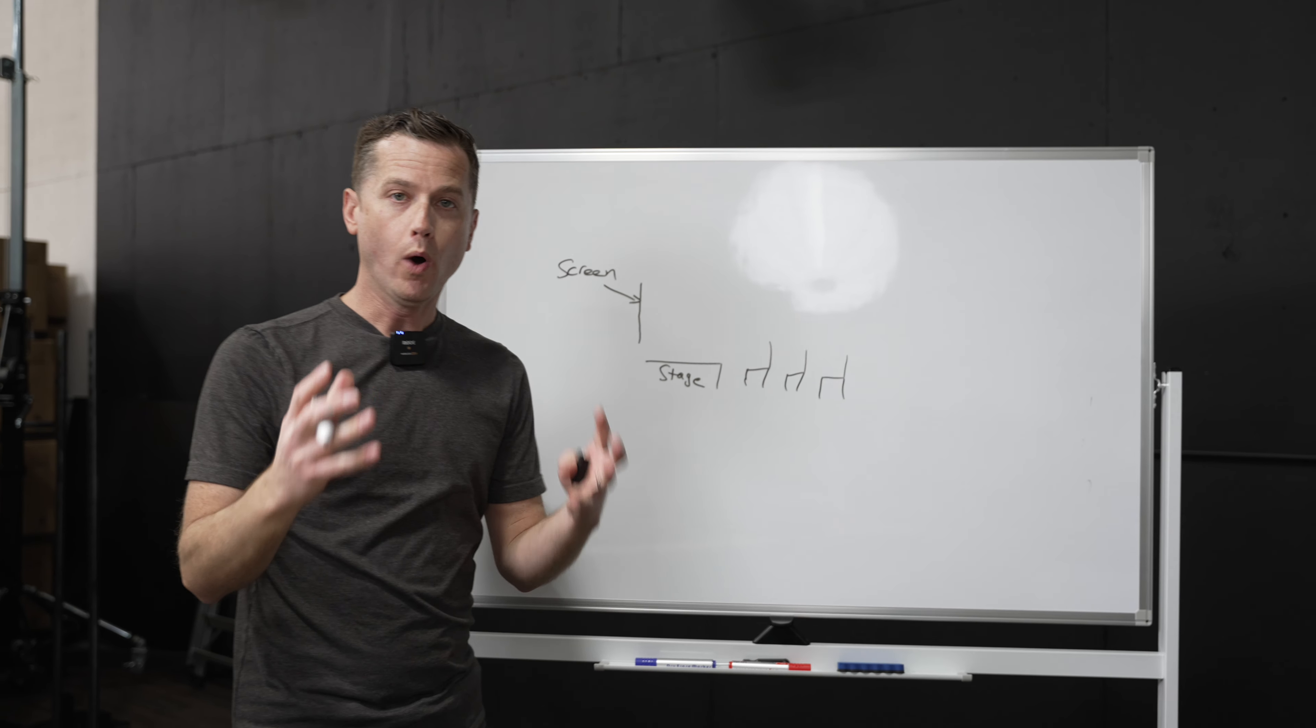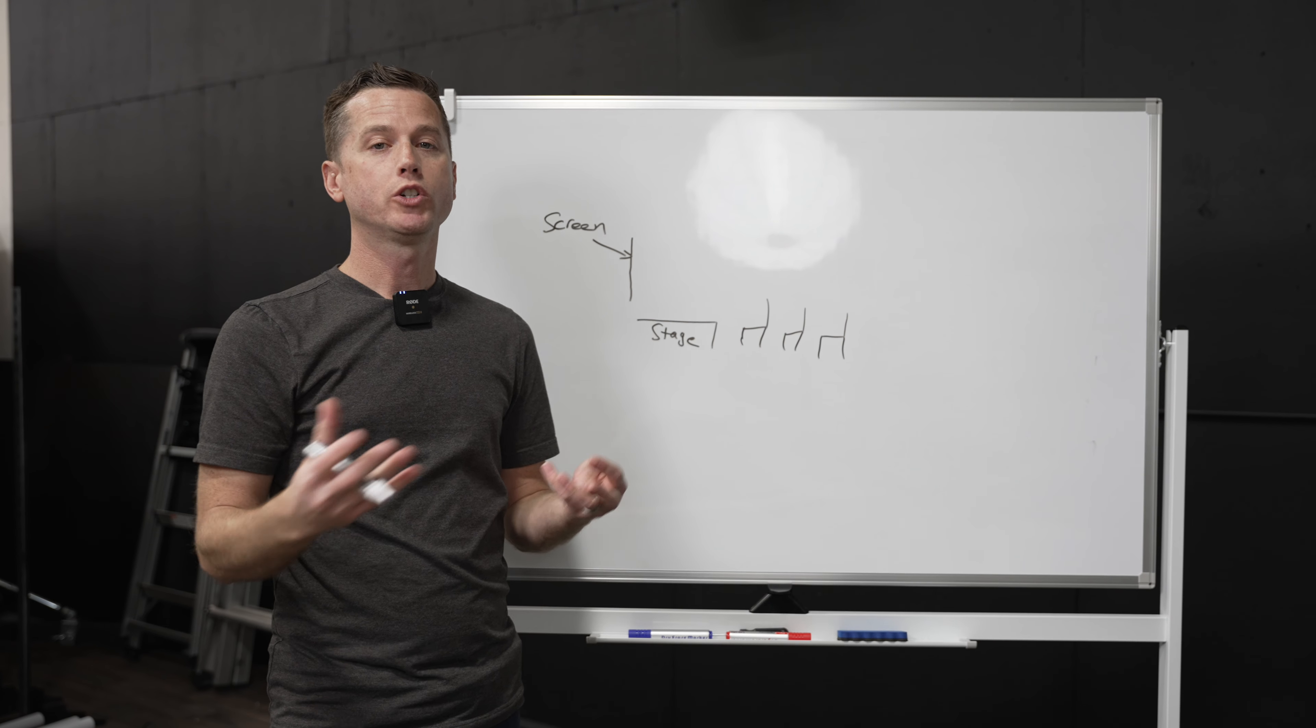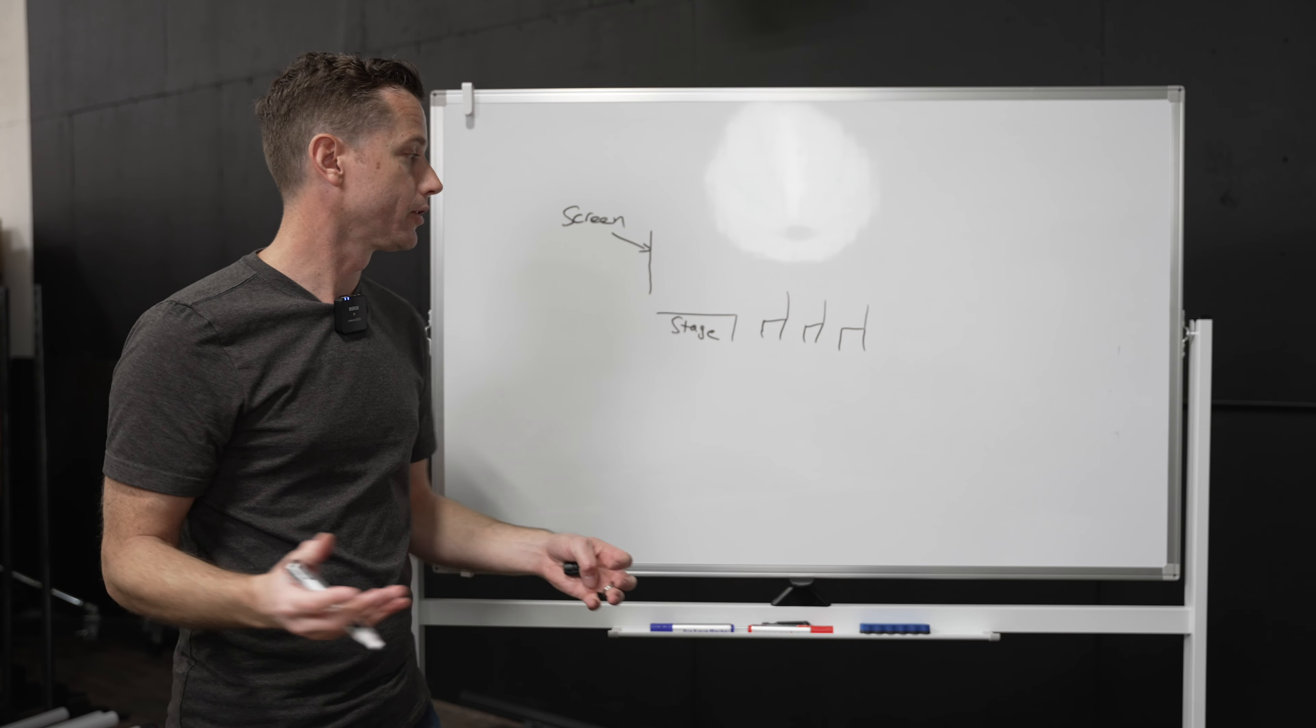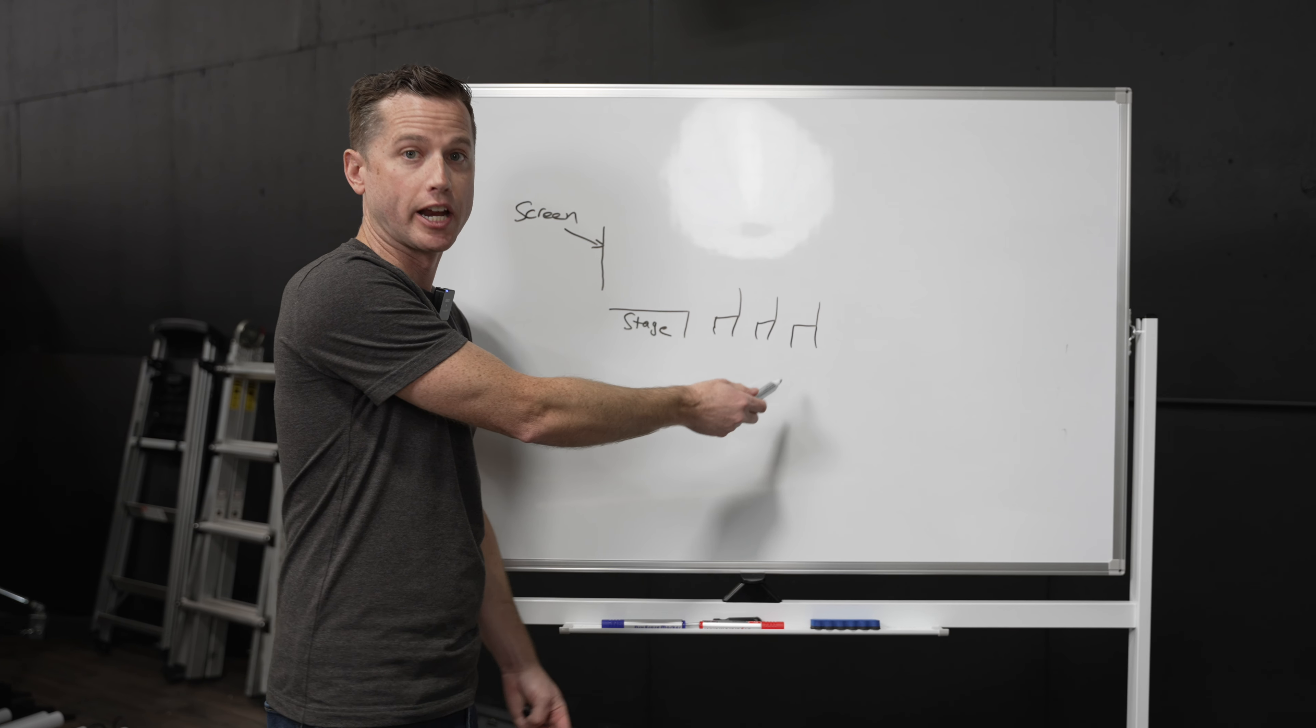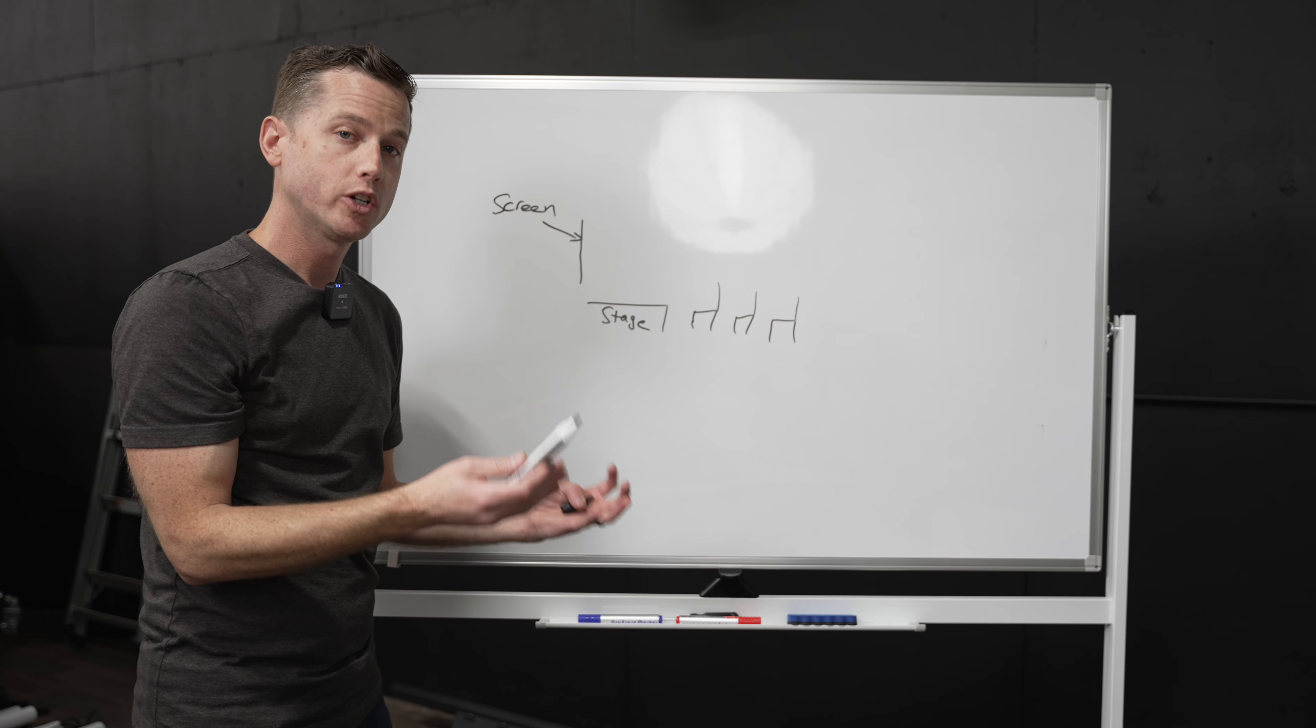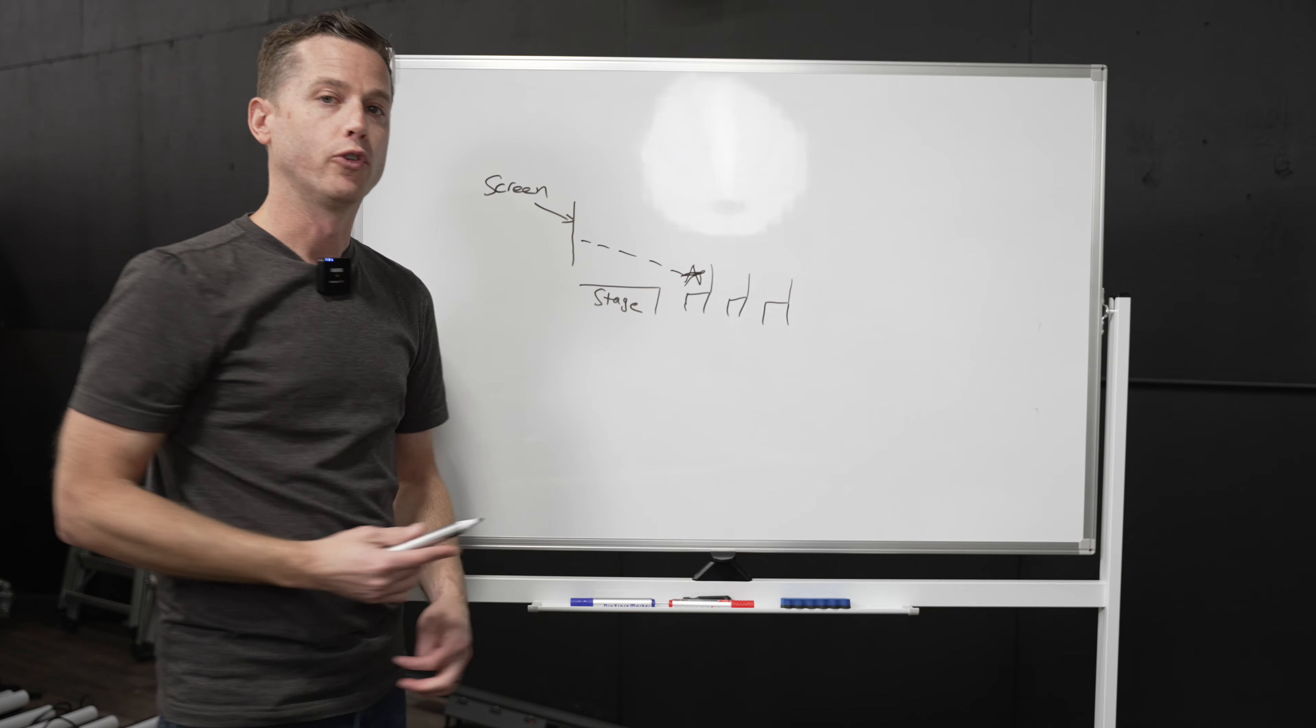Okay, so now that we know what the numbers represent when it comes to pixel pitch and how that number is calculated, now we need to determine which pixel pitch is right for your room. And how that's factored is based on that viewing distance. So here we have in this diagram our chairs, our congregation sitting area essentially. We have our stage and then we have our screen.